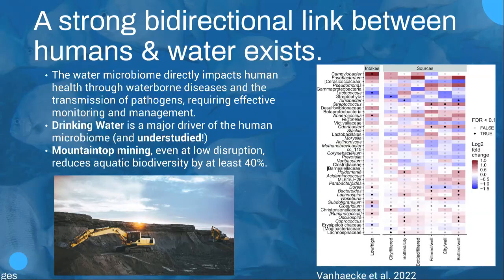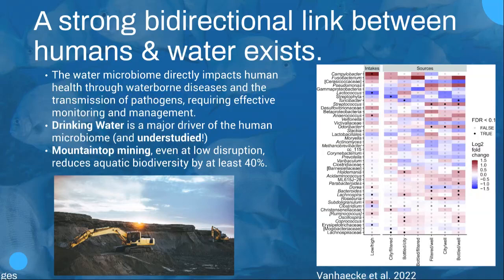Another thing I wanted to note about this bidirectional link between humans and waters relates to mountaintop mining, where researchers from Duke University found that even at the lowest levels of disruption as defined by the EPA's reference point, aquatic biodiversity is reduced significantly by at least 40%. Dr. Bernhardt from Duke said that by the time you get to the EPA's reference point, you've already lost most of the species you are going to lose. The team used a method called environmental DNA, or eDNA, which measures genetic material left behind in the environment.